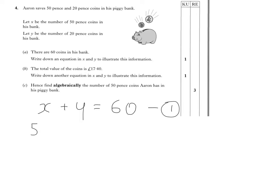So pretty straightforward: 50x plus 20y. Just be careful, we're operating in pence here. So I'm going to change this £17.40 into pence. There's 100 pence in a pound, so that's multiplying by 100. And that's 1740. That's equation 2.